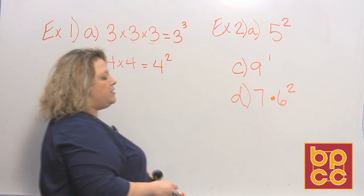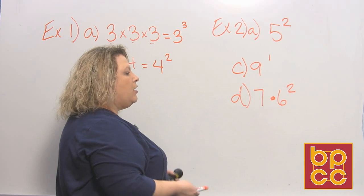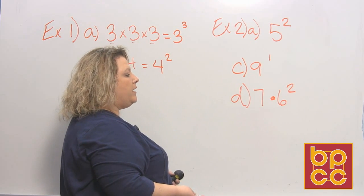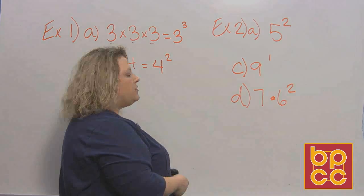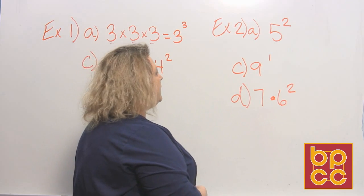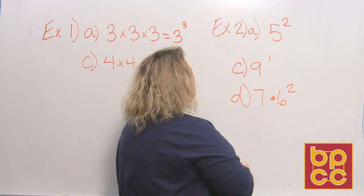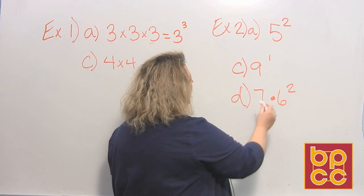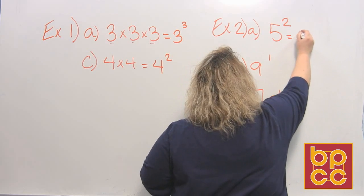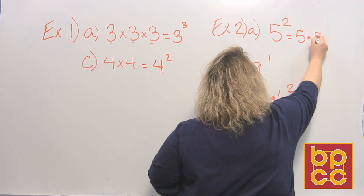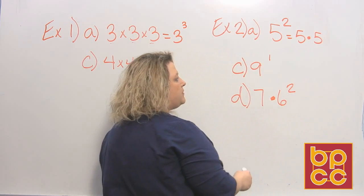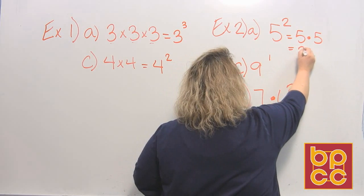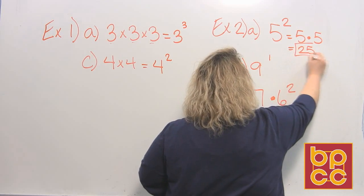Now, the next thing that we're going to do is something called evaluating. When you evaluate, that means that you take the problem and you work it out and give me an answer. So let's work some of these out. I wrote three of them on the board. The first one is five to the second power. And five to the second power means five times five. Well, five times five, when you do your multiplication tables, is twenty-five. So the answer is twenty-five.